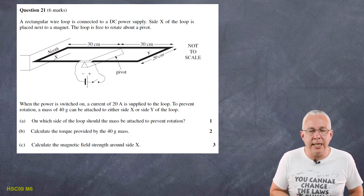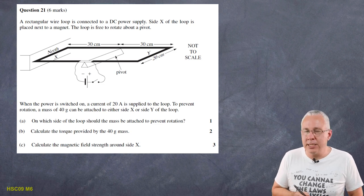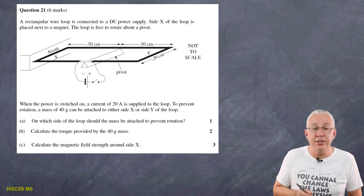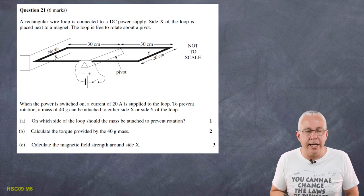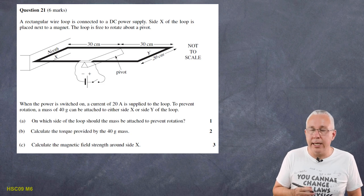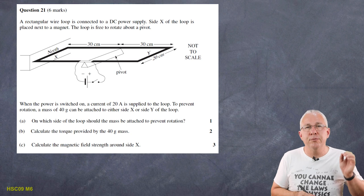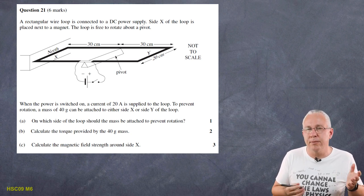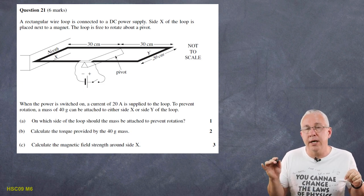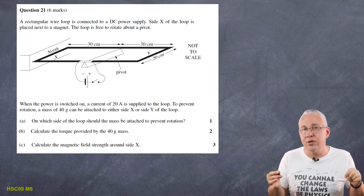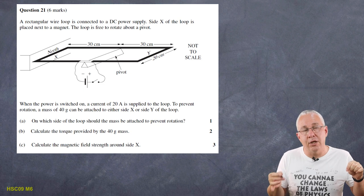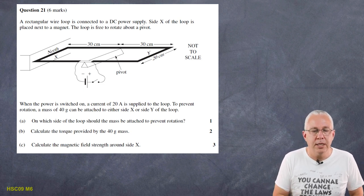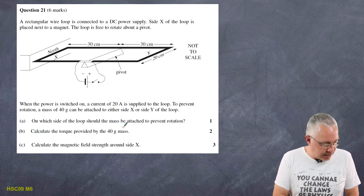Question 21: a rectangular loop in front of a magnet carries a current. One side of the loop, closer to the magnet, experiences a force due to the motor effect. A current of 20 amps is applied; a mass of 40 grams can be placed on either side X or Y to prevent rotation. This setup is similar to a current balance — like a seesaw where the magnetic force on one side is balanced by a weight on the other to give net torque of zero.